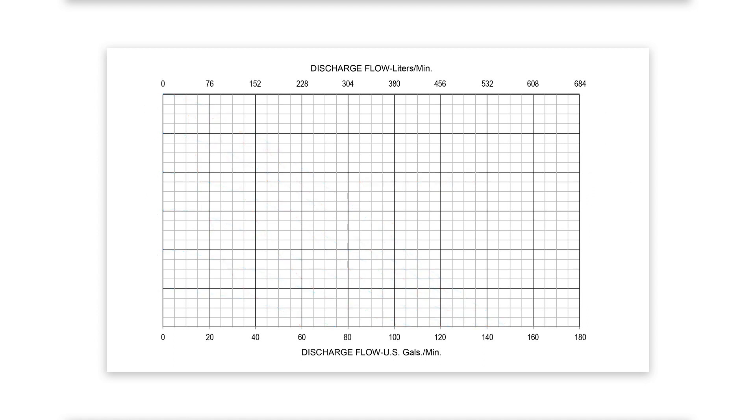Along the horizontal axis is the flow rate. Gallons per minute is identified at the bottom, while liters per minute is identified at the top.